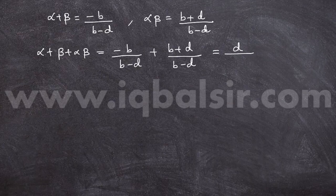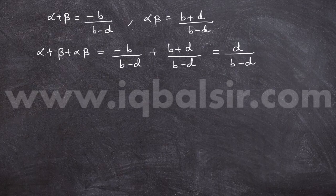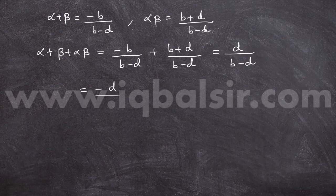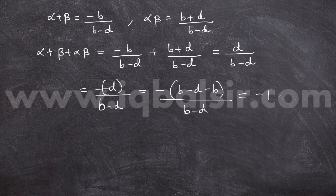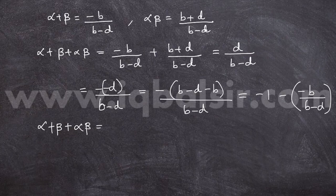We are asked to find alpha + beta + alpha·beta. Substituting these values, we get −b/(b − d) + (b + d)/(b − d), which simplifies to d/(b − d). You are probably stuck here because we need to find a numerical value. So here is the tricky part: I am going to manipulate this expression. I rewrite it as −(b − d − b)/(b − d), which splits as −1 − (−b/(b − d)). Notice that −b/(b − d) is nothing but alpha + beta. So, alpha + beta + alpha·beta = −1 − alpha − beta.